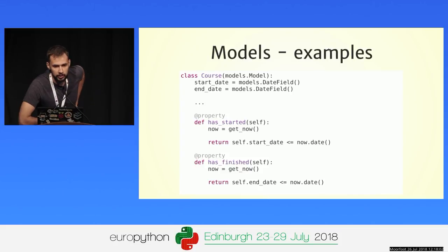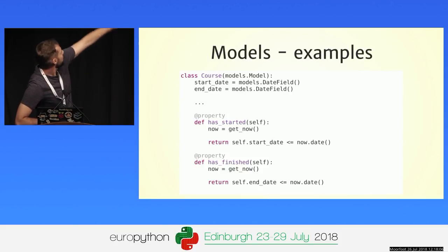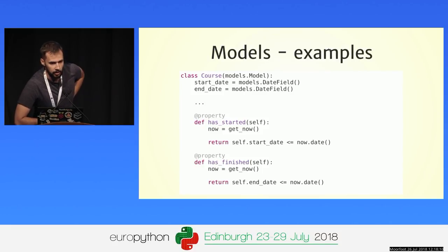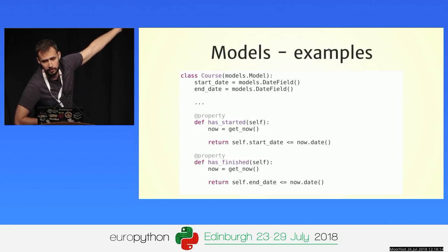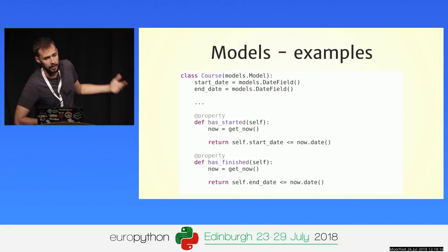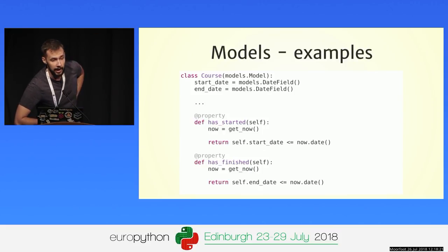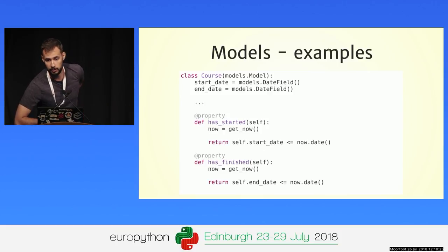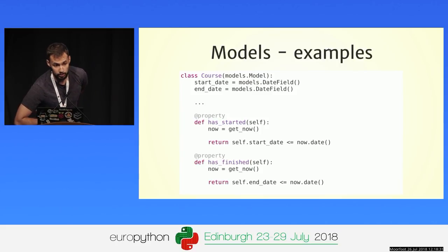Let's see an example. Let's have a course model that defines a start and end date. Business logic can be something like has_started or has_finished — it depends on the current time. We have some get_now that returns the proper date in the proper time zone, and we return true or false whether the course has started or finished, and we return this in some API and the UI updates accordingly. This is an example of business logic that's pretty straightforward and is the right place to add it.